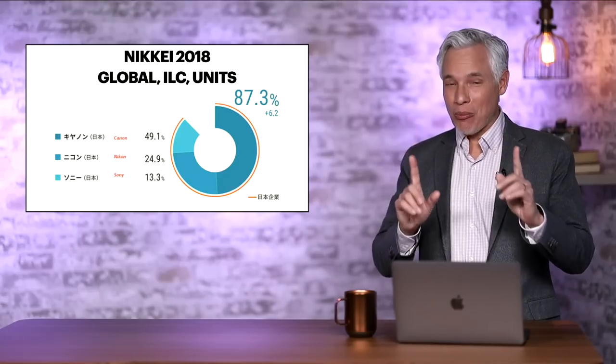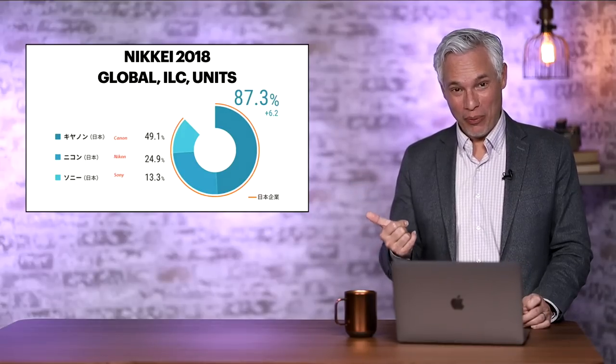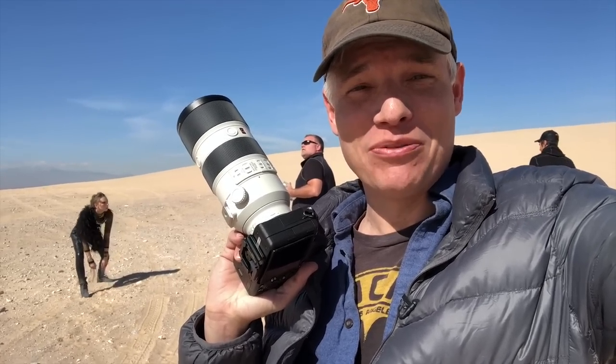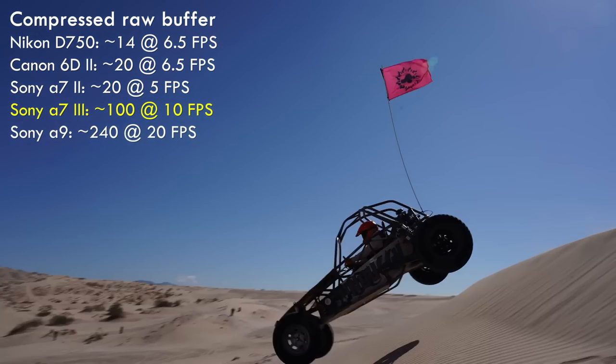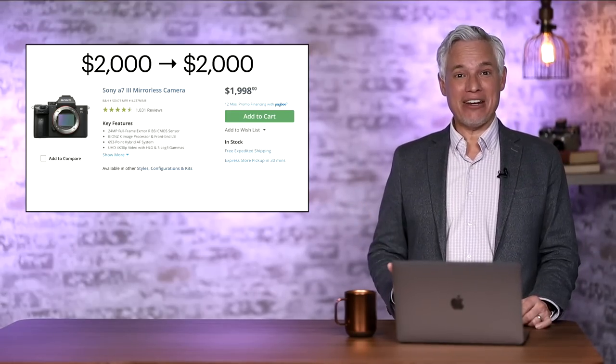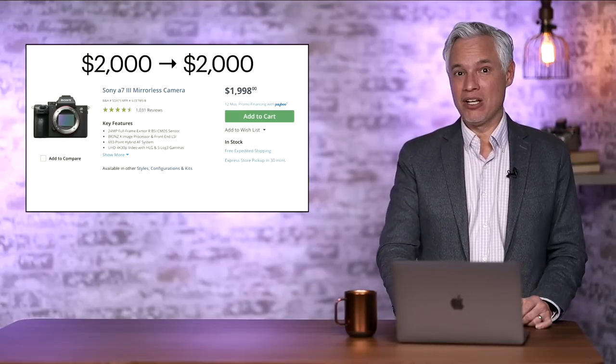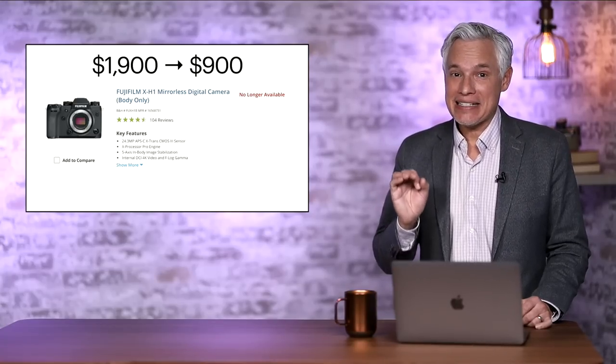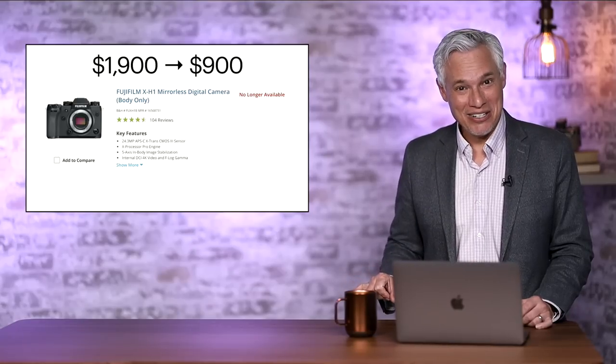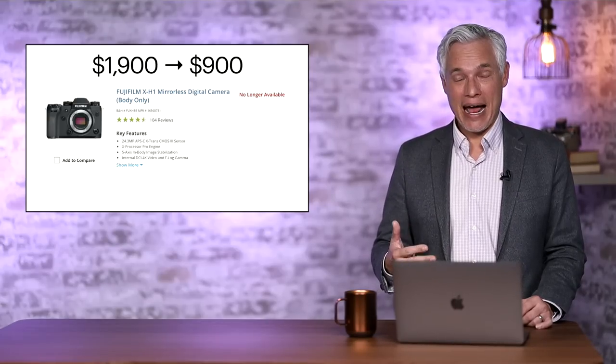So how could Sony be number one full-frame camera in the United States at only 13.3% global market share? Well, that year, 2018, they launched the Sony a7 III. The price point was what was amazing. It was basically like a $2,400, $2,500 camera that they were selling for $2,000. How much of a crazy value was that? Well, today, four years later, it still sells new for $2,000. That same weekend in Las Vegas, Fujifilm launched the X-H1 for $1,900. The price dropped to like $800, $900 before Fuji just completely discontinued it.